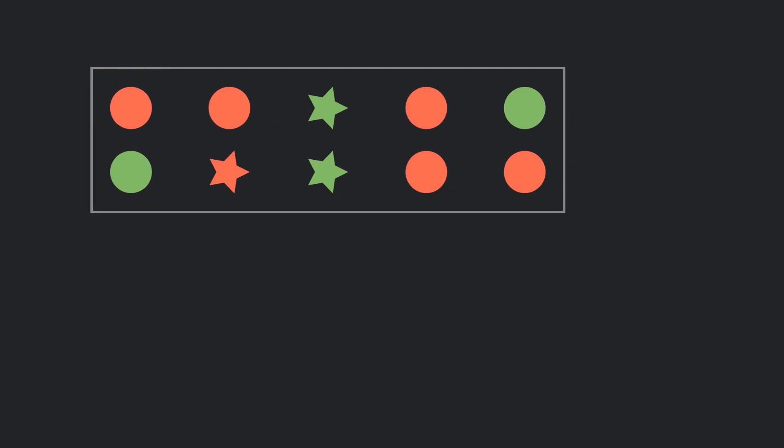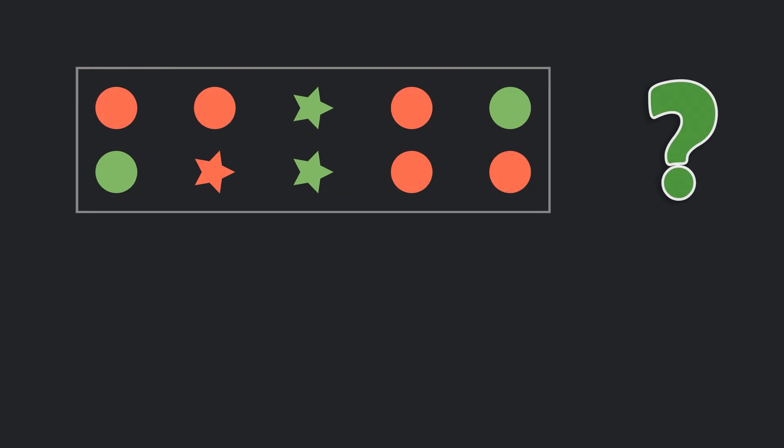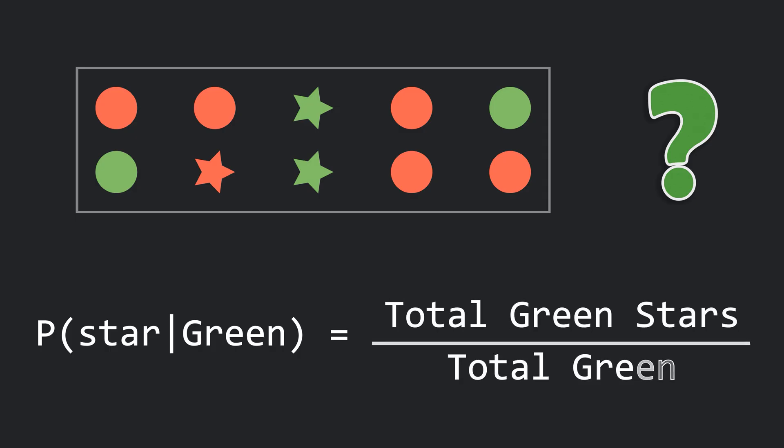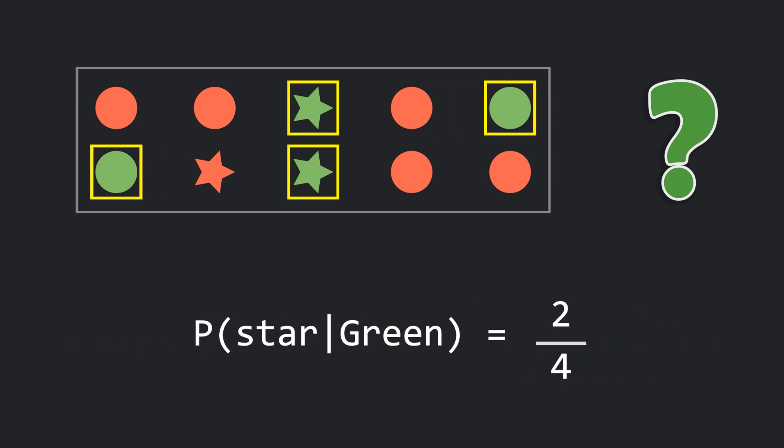So far it's all straightforward, but now let's flip the situation. Suppose a shape has already been picked and we are only told that it's green, nothing else. Now what's the probability that the shape is a star given that it is green? This straight line after the star is called given that. The word given is crucial. It tells us we are only considering the green shapes now. Among those, how many are stars? If there are two green stars out of the four green shapes, then the probability becomes 2 divided by 4.